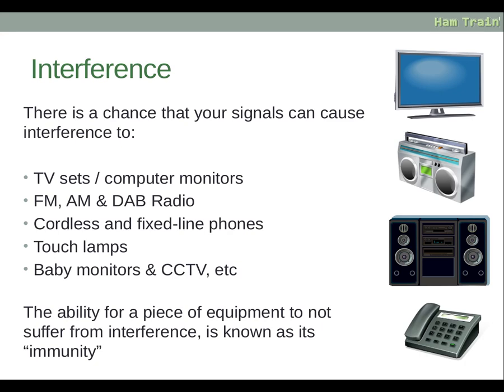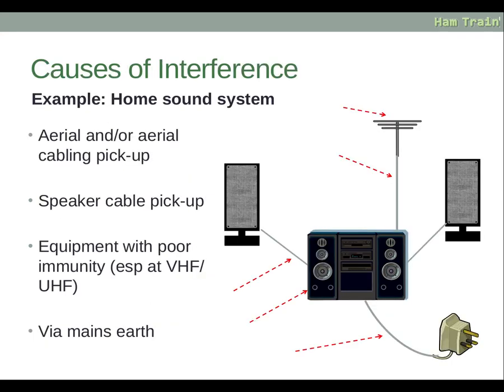The ability for a piece of equipment to not suffer from interference is known as its immunity. For causes of interference, consider a home sound system. The signal from your radio system could be picked up by the aerial of the sound system if it has a radio built in, or even the aerial cabling — the coaxial cable if it's not got good shielding. It can be picked up through the cable going to the system, or through the speakers, because that wire acts like an aerial and will receive signals. This is especially a problem with equipment with poor immunity, particularly at VHF and UHF frequencies, or if the unit itself is not well designed.